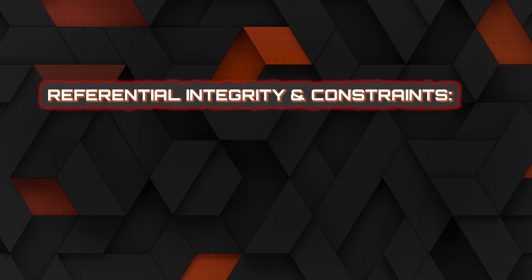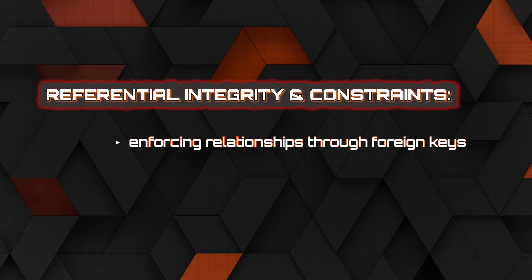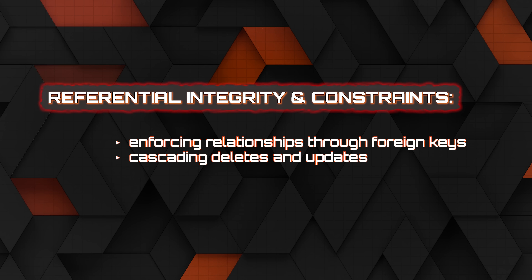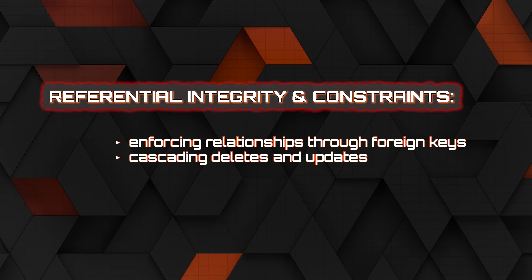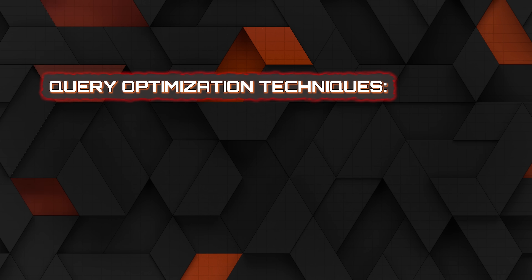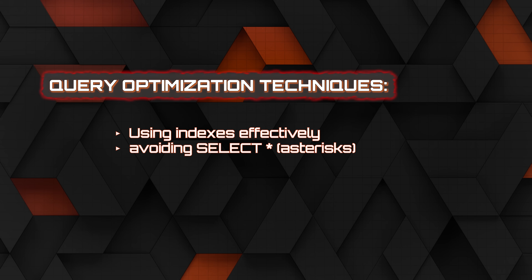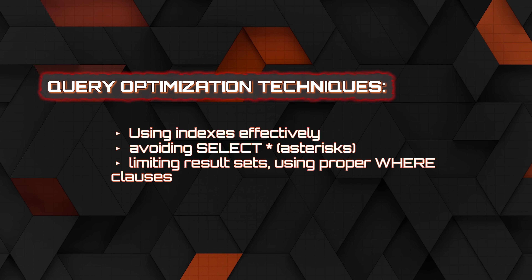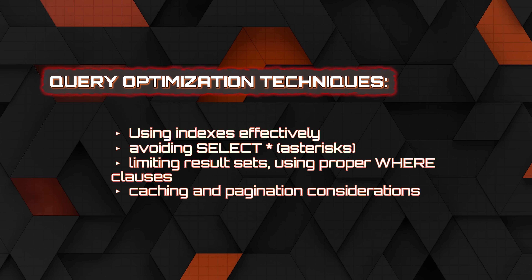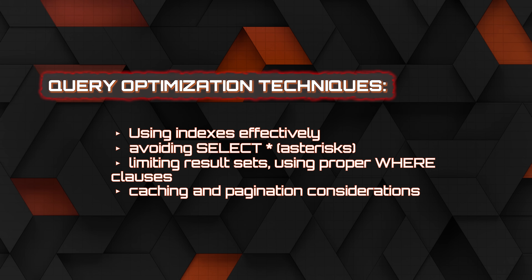Next is referential integrity and constraints: enforcing relationships through foreign keys, cascading updates and deletes, and handling constraint violations. Nearing the end of the intermediate section, look at query optimization techniques — how to use indexes effectively, avoiding SELECT *, limiting result sets using proper WHERE clauses, and caching and pagination considerations — making your queries as optimal and fast as possible.